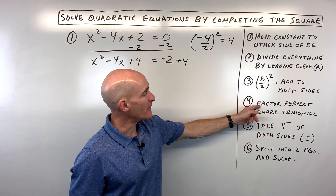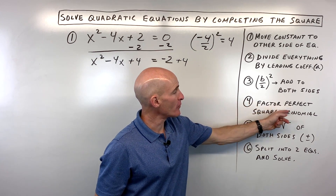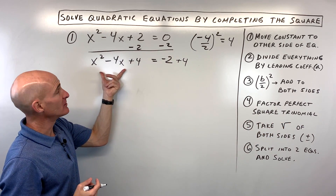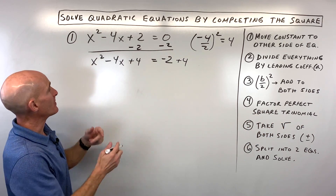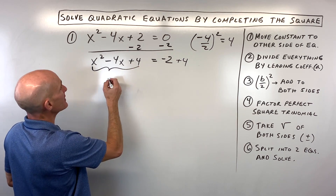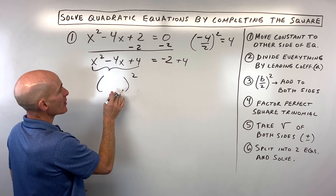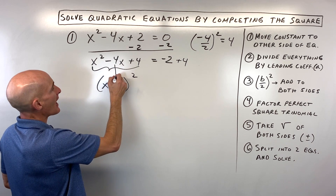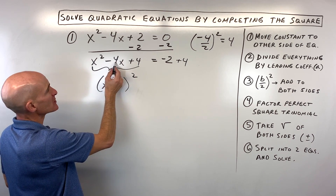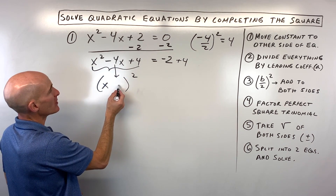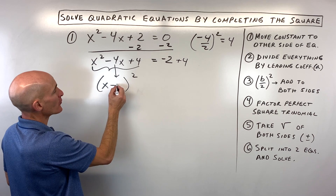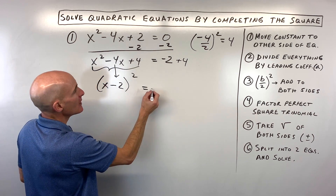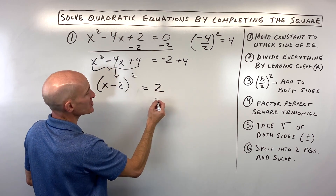Step number 4: factor the perfect square trinomial we created on the left side. It's always going to be a binomial squared, and it's always going to be half of the b value. Since b is minus 4, we write minus 2 — always half of that b value. So we have x minus 2, the quantity squared, and on the right side, negative 2 plus 4 is 2.